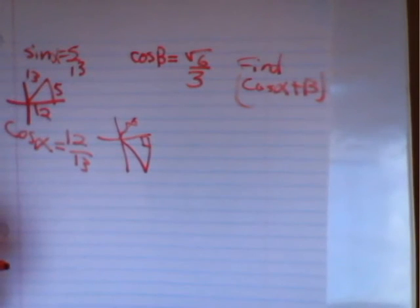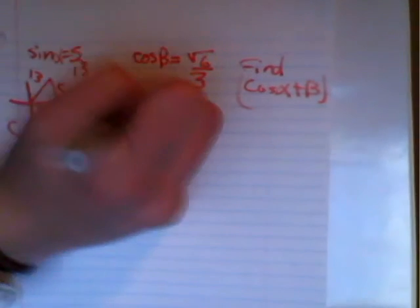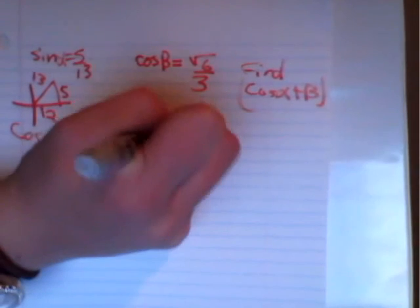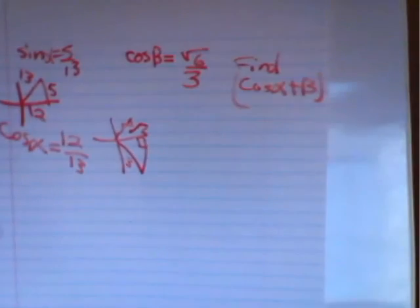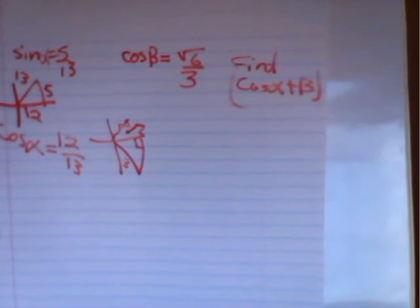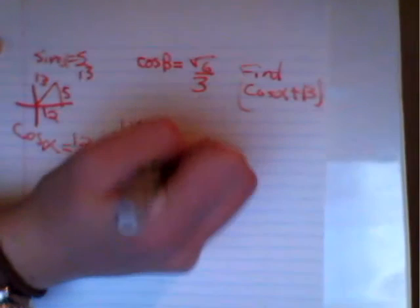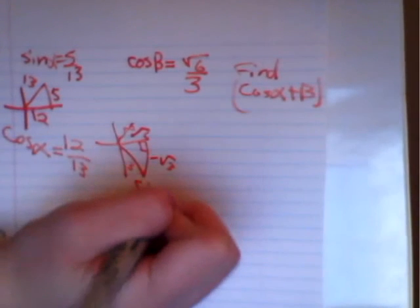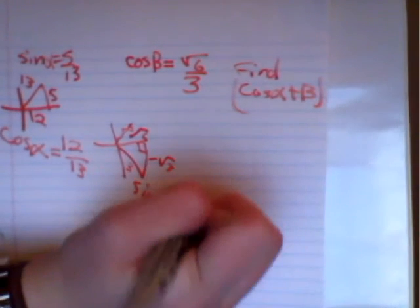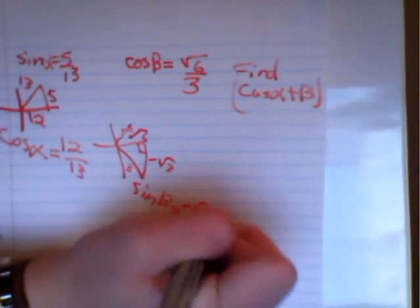And we have square root of 6, which is the adjacent side, and then we have 3, which is the hypotenuse side. And we're looking for the opposite side, which is going to be negative square root of 3. So the sine of beta equals negative square root of 3 over 3.